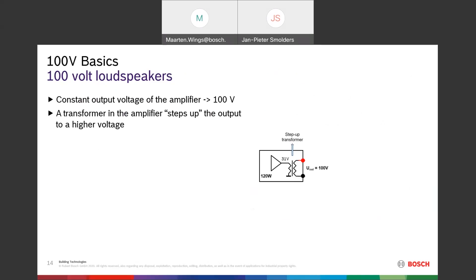How does the 100-volt system work? Basically it uses the same amplifier as in the low impedance examples, which delivers 31 volts at the output. But a transformer has been added just behind the amplifier — inside the device — which steps the voltage up from 31 volts to 100 volts. That is what we call a step-up transformer, and that gives us the 100-volt loudspeaker line.